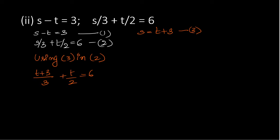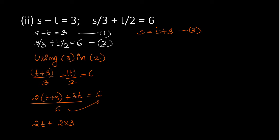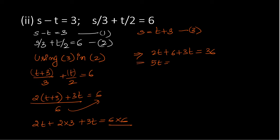Since it is fractional, multiply through. Multiplying by 2 and by 3: 2t plus 6 plus 3t equals 36. So 5t equals 36 minus 6, which is 30. Therefore t equals 30 divided by 5, so t equals 6.